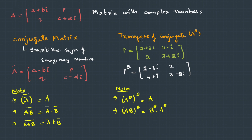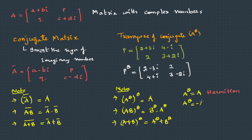Also, (A+B)^θ = A^θ + B^θ. If A^θ equals A, then A is called a Hermitian matrix. If A^θ equals negative A, it is called skew-Hermitian. If A^θ times A equals the identity, it is called unitary. These are directly comparable to transpose properties: symmetric corresponds to Hermitian, skew-symmetric to skew-Hermitian, and orthogonal to unitary.